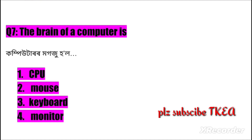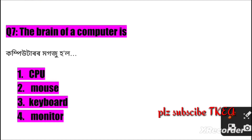Question number seven: What is the brain of the computer? Option one: CPU, two: mouse, three: keyboard, four: monitor. The right answer is number one: CPU.